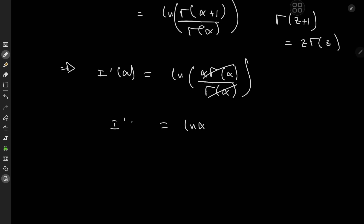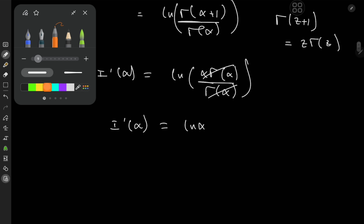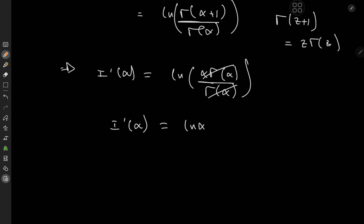So that's the derivative of I with respect to alpha, which was fairly quick. Now we return to the integral function by integrating with respect to alpha. Integrating by parts yields I(alpha) = alpha·log(alpha) minus alpha plus a constant of integration C.